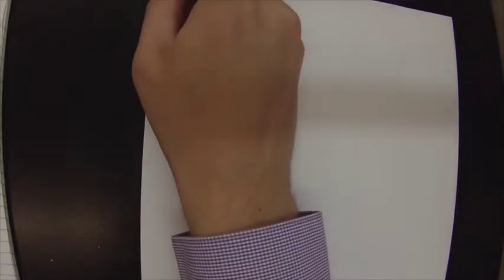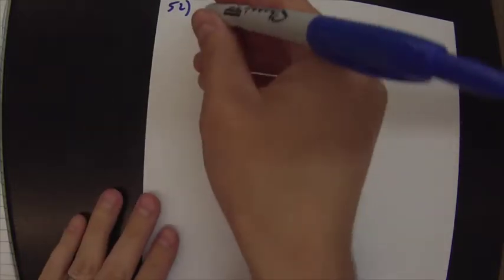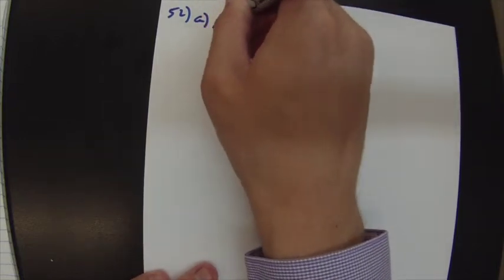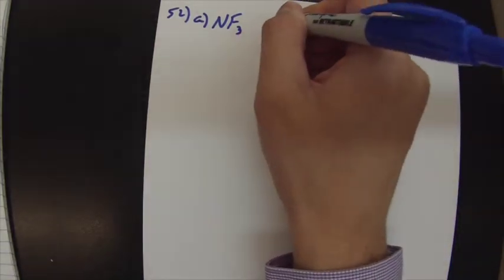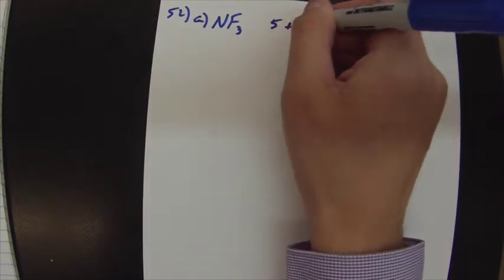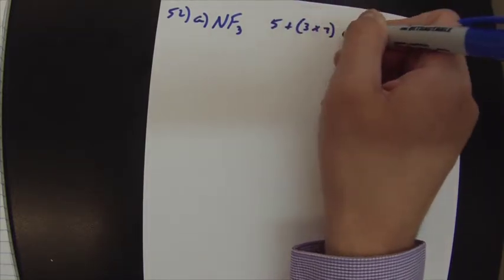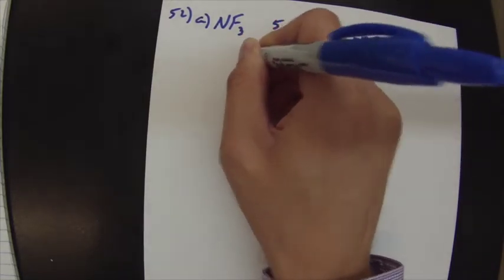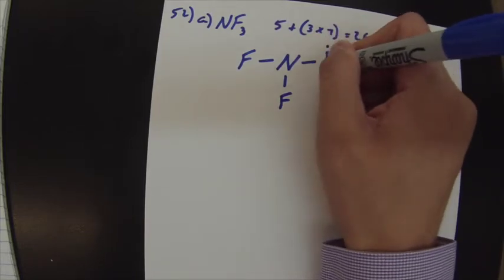Alright. Next up is number 52. Number 52 just wants you to draw the Lewis structure. So I'll do A. I have a whole video on Lewis structures. So I'm not going to spend a ton of time going over it right now just because I made a whole video on it. If you're that curious, watch my other video. I'll put a link to it in this YouTube video. So first we're going to count up our valence electrons. Nitrogen gets 5. And then each of the 3 fluorine gets 7. So that gives us 27 electrons to work with. You put the least common, the one that there's only one of or the least amount of, in the middle. Put the more common ones around the outside.